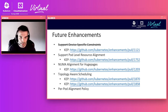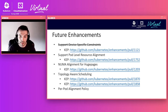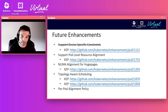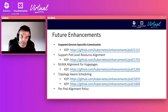Support for pod-level resource alignment: Topology Manager currently aligns all resources for a single container. This enhancement would extend the scope to allow alignment of all resources for all containers in a single pod. A KEP has been approved and merged.